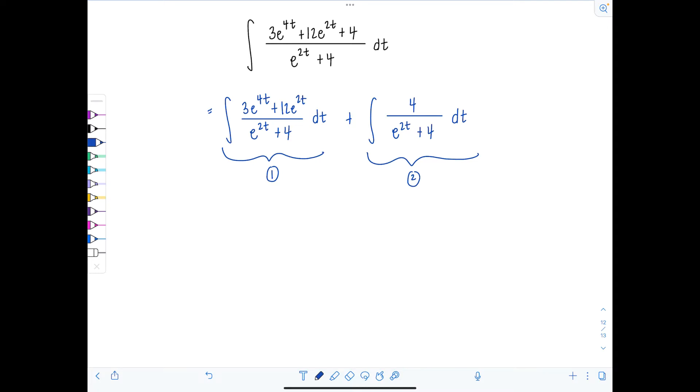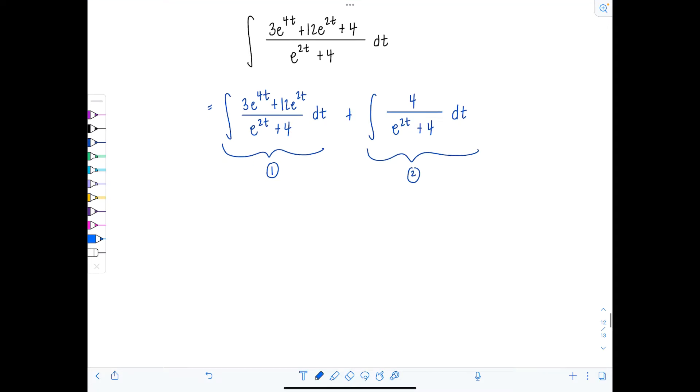And the first one's quite easy, once you notice something that you can actually factor out from both terms in the numerator, a 3e to the 2t. And when I do that, then I'm left with just e to the 2t plus 4, which is oh so convenient, because then I can cancel with the e to the 2t plus 4 in the denominator. So now this is entirely gone. So this is gone.